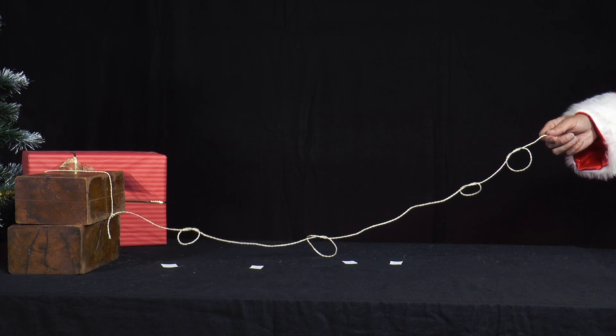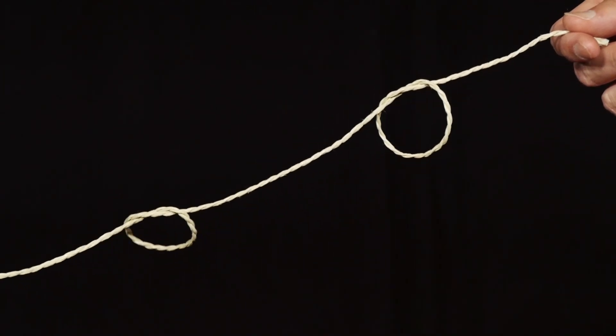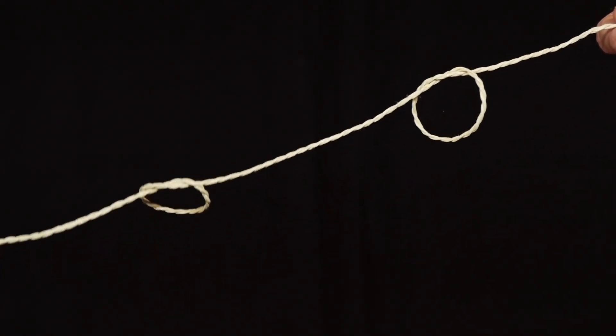When the loop radius is large, one part of the string is only weakly pressed against the other in the loop. The resulting friction force between the two parts of the string is small.